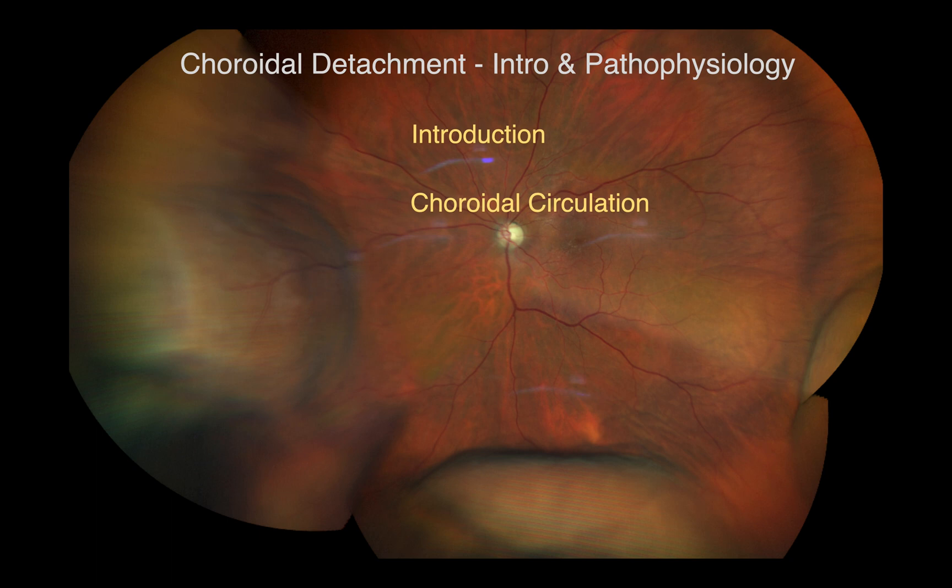Clinically, choroidal detachment may vary in presentation from asymptomatic to very poor vision, ocular pain and nausea. Eye exam findings include serous detachment, shallow anterior chamber or angle closure.